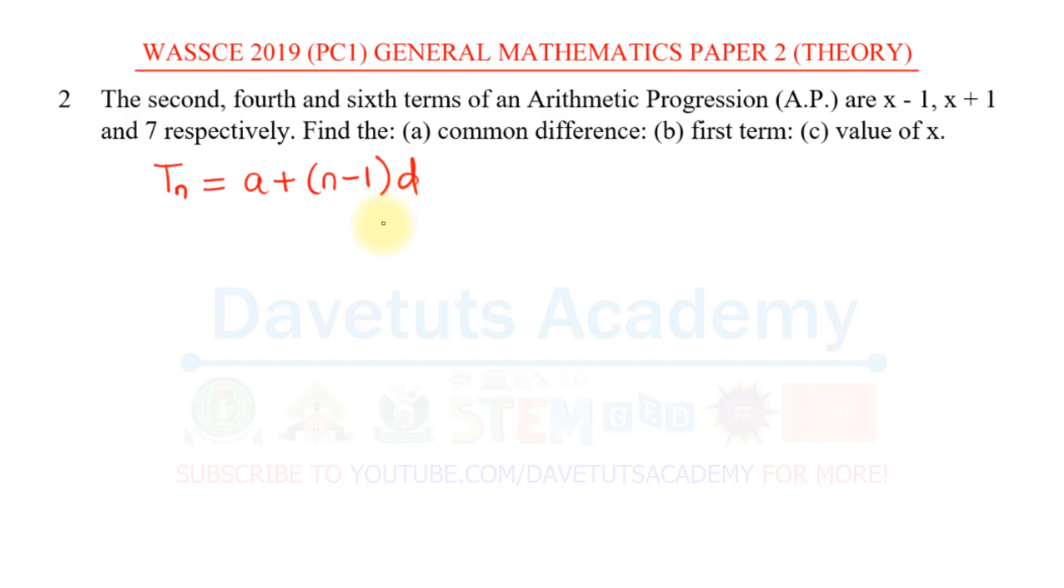Looking at this question, we are told that the 2nd, 4th and 6th terms are x-1, x+1 and 7 respectively. Respectively means that x-1 is the 2nd term, x+1 is the 4th term and 7 is the 6th term. So I will say this is T2, then this is T4 and 7 is the 6th term, that is T6.